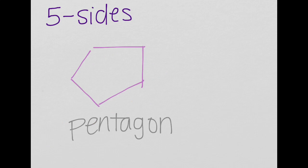When it has five, so we have one, two, three, four, five, it's called a pentagon. And can you guess why? Well, you're right. Penta is five.